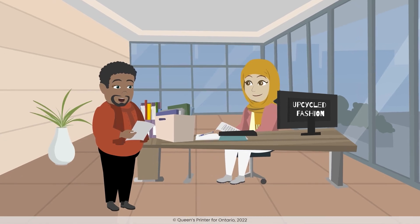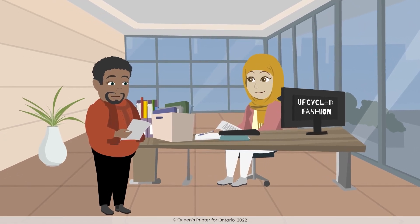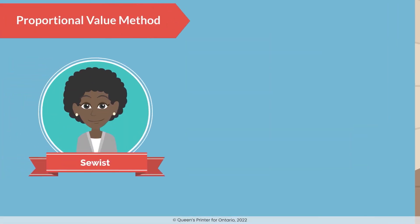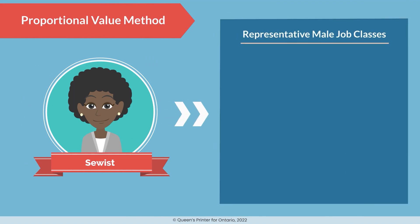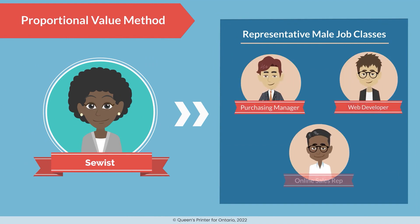What is the Proportional Value Method? With the Proportional Value Method, we look at multiple male job classes together to determine if our female job classes are paid equitably. We select a group of three or more male job classes so that together, they can represent the overall compensation pattern or practices we have in our company.